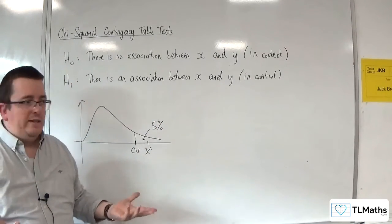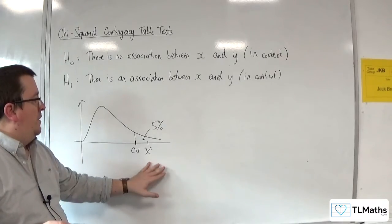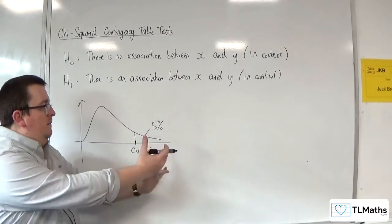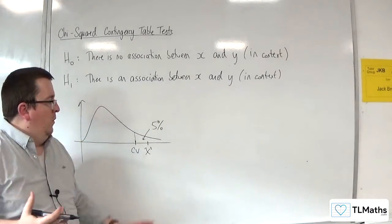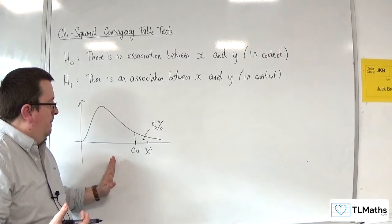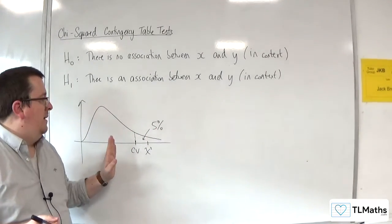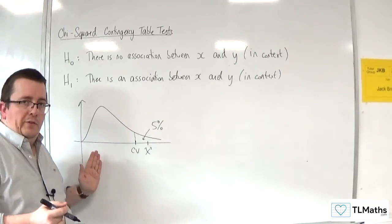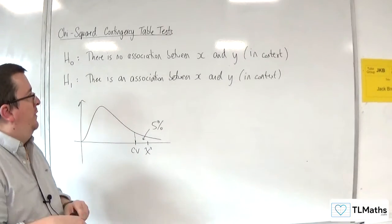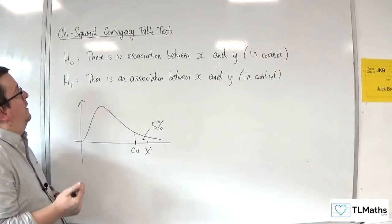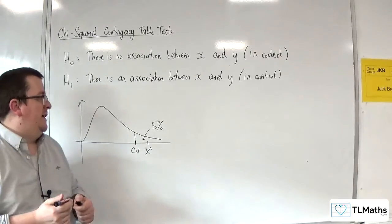That could be 10% significance level. Is the chi-squared statistic within your critical region or is it not? Actually, we only look and consider that one tail. Is it past the line or is it not past the line? That is what we are looking at with the chi-squared contingency table test.